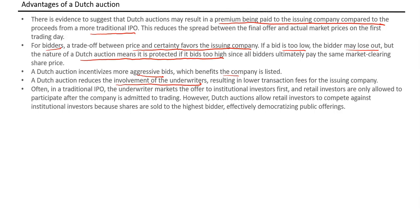In a traditional IPO, the underwriter markets the offer to institutional investors through a typical book-building process. The Dutch auction method, however, is open to both institutional investors and retail or individual investors. The final advantage is democratizing the public offering — making it available to all investors, both retail and institutional.